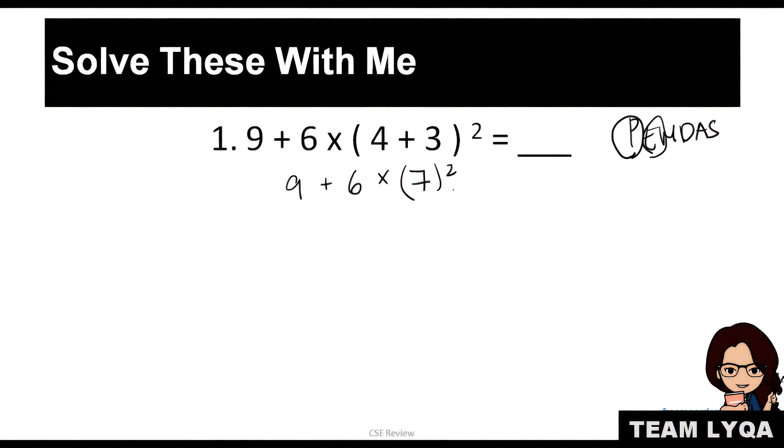So, 9 plus 6 times 7 squared. Next, exponent. Meron ba tayong exponent? Yes. Ito yun. So, unahin natin siya. Kokopyahin nyo lang yung iba na hindi nyo pa ginagalaw and then 7 times 7 kasi 7 squared siya. That is 49.